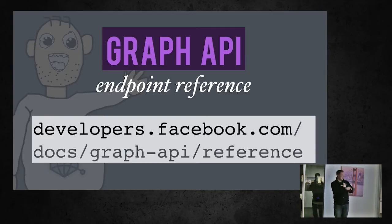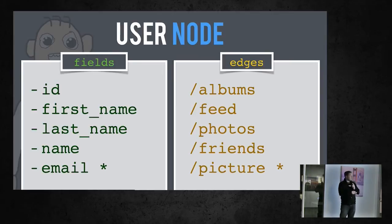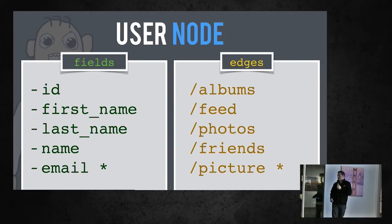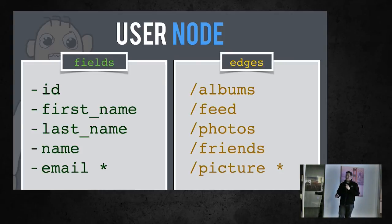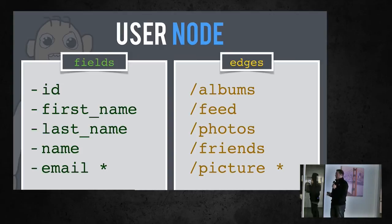Looking at a user node, some example fields include ID, first name, last name, name (which is a concatenation of first and last), and email. Email has a star because it requires special permission — you have to ask the user for access to see their email address. On the user node, we also have edges: albums, feed, photos, friends, and picture. Picture does not require any special permissions, but the other edges like feed and photos do require special permission.